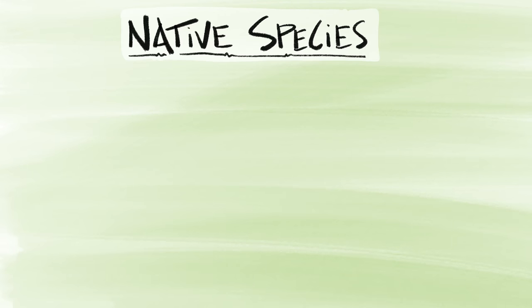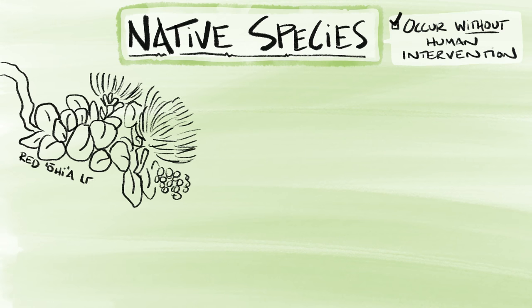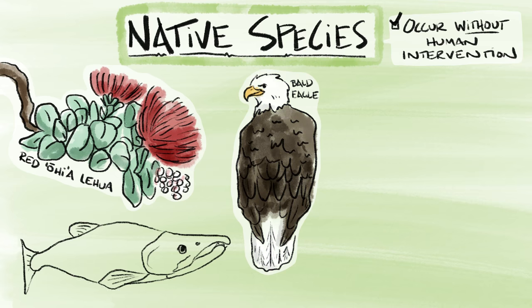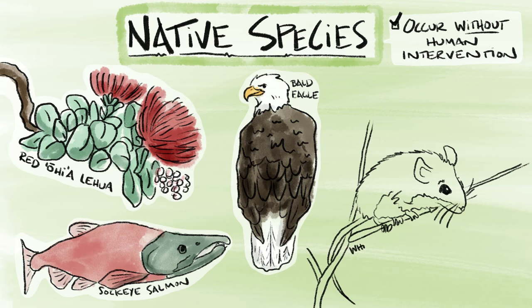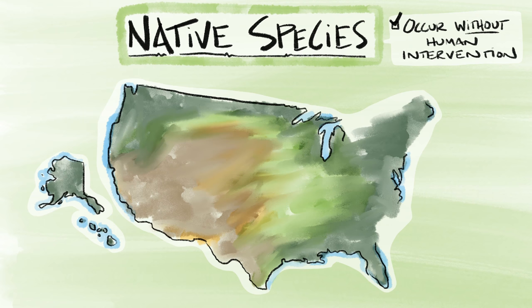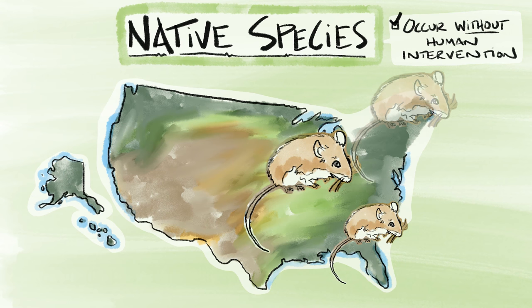Native species. These are all organisms that have occurred, now occur, or may occur without human intervention. One example is the white-footed mouse. It's native throughout the eastern United States. When found in nature, the mouse is an integral part of the ecosystem.